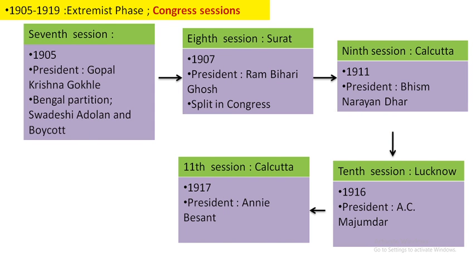These are some sessions. I have not included all sessions here, only the ones of particular importance. The 1905 session in Calcutta was very important — it was presided over by Gopal Krishna Gokhale. In this 1905 session, there are some very important resolutions that Congress passed on Bengal Partition and the Swadeshi Andolan Boycott Movement.